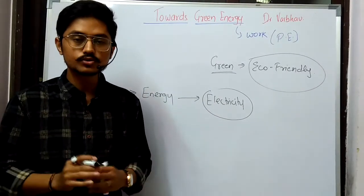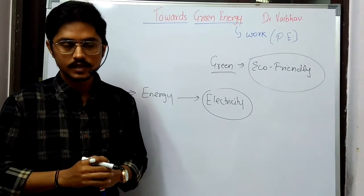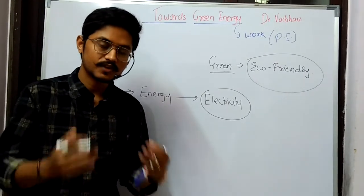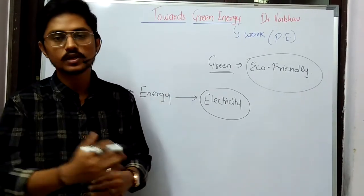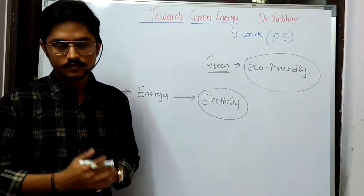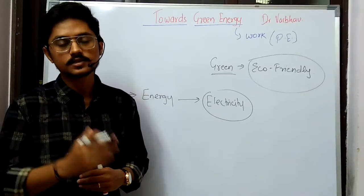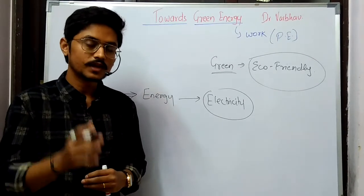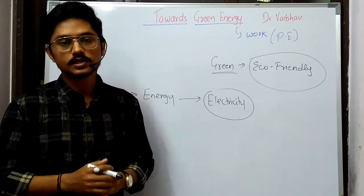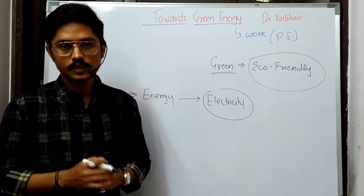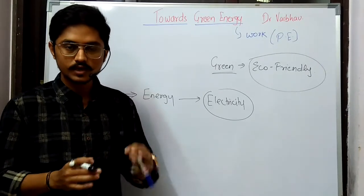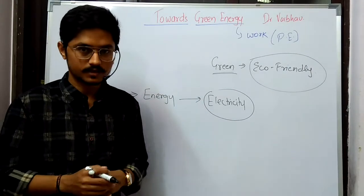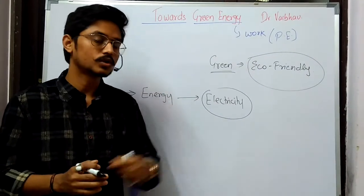We are continuously using electricity — we are on phones, TV, laptops, AC, fan, light. We cannot sustain without electricity in today's world, and even you cannot get educated in this scenario. So it is continuous. Have you ever thought from where are we getting this 24 hours of electricity continuously? There has to be some source, right? So we are going to discuss in this chapter where the electricity coming to our homes is coming from and how it has been formed.